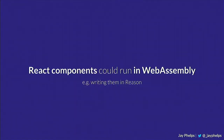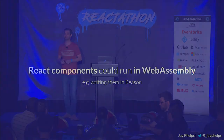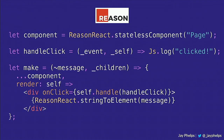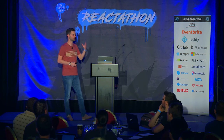Another thing many people will end up doing is writing their React components in another language compiled to WebAssembly. Languages like Reason — there's a talk later today introducing Reason. Reason currently compiles to JavaScript, but they're already experimenting with compiling Reason to WebAssembly directly. To be prime time it will require garbage collection support, but I think we're going to see a revolution of brand new languages, and using them with React through WebAssembly would be very natural.